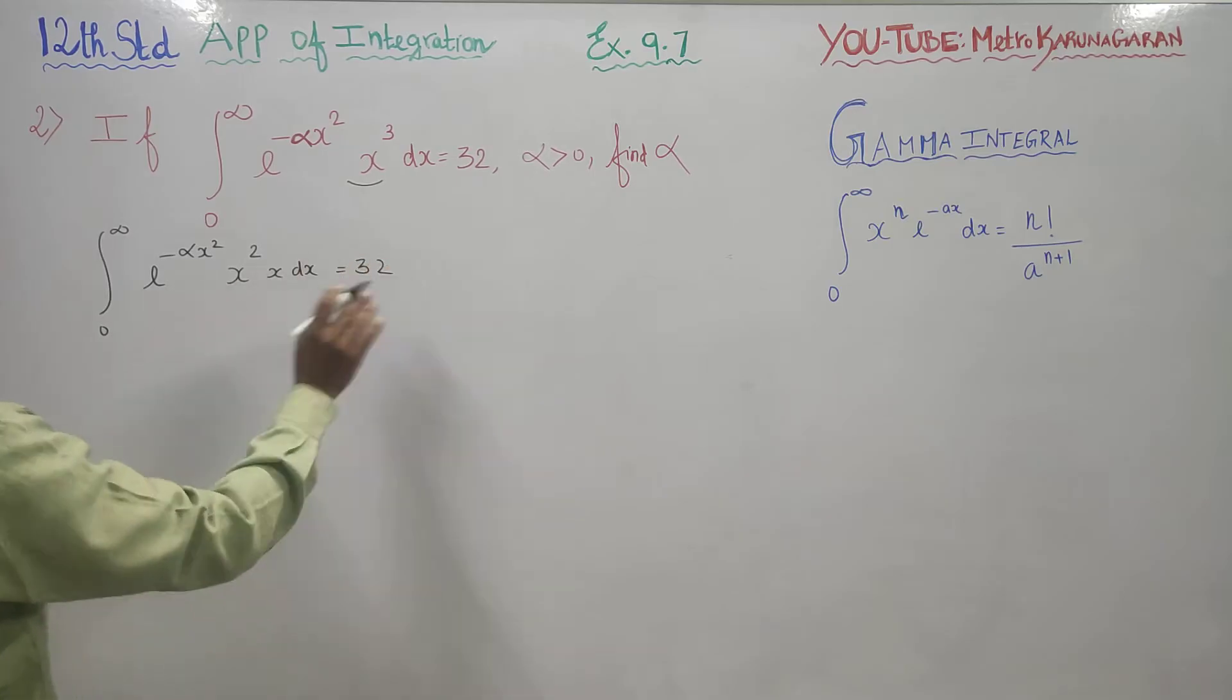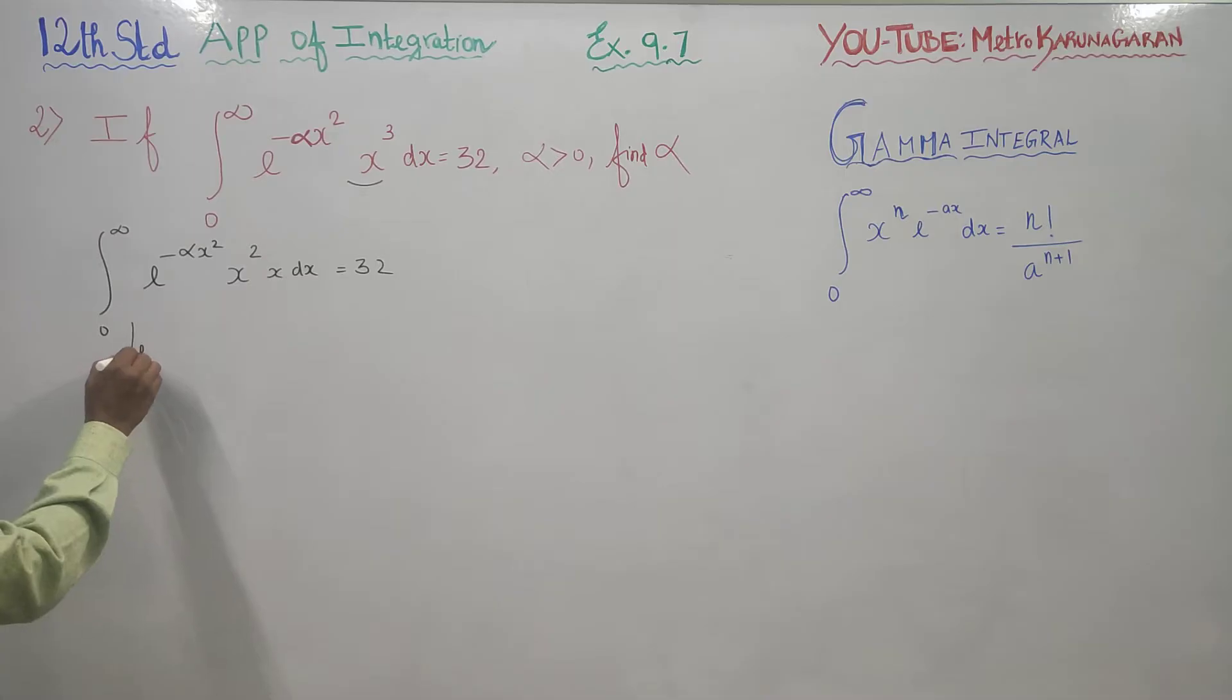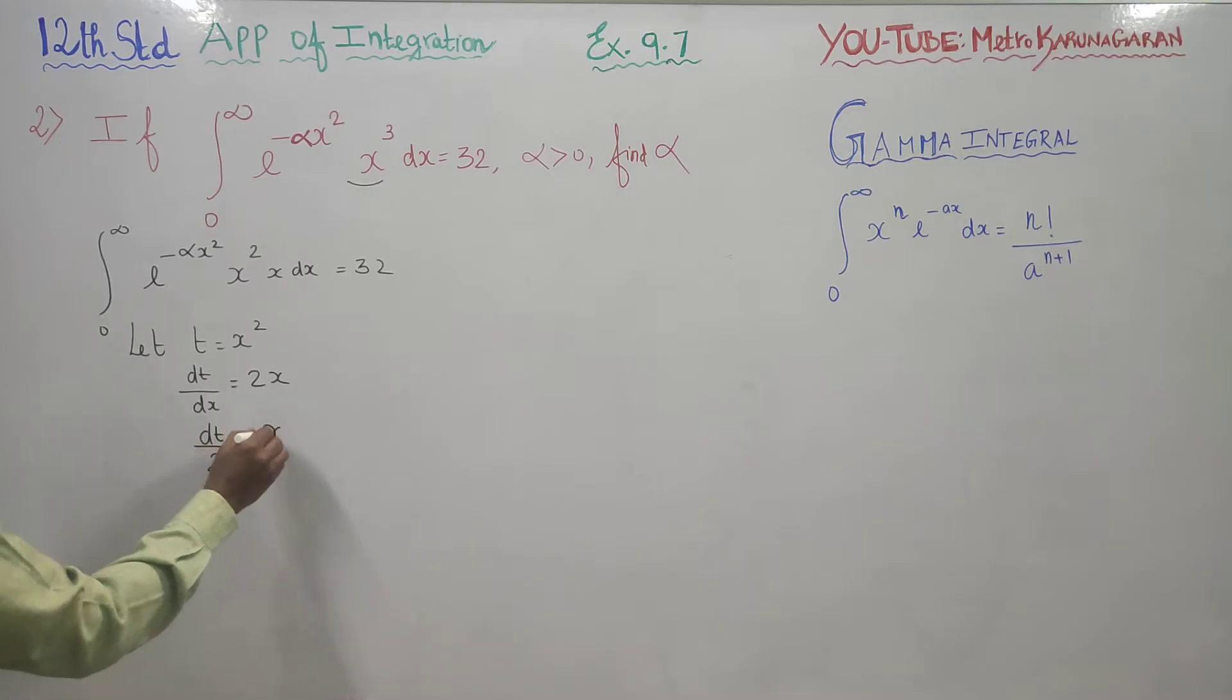I am going to use a substitution method. Let t equal x squared, then dt by dx becomes 2x, so dt by 2 is x dx.